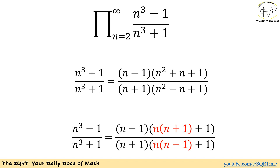To do this, let's start with what we have in the numerator. We have n cubed minus 1, which we can write as (n minus 1) times (n squared plus n plus 1). And for the denominator, where we have n cubed plus 1, we are going to write it as (n plus 1) times (n squared minus n plus 1).